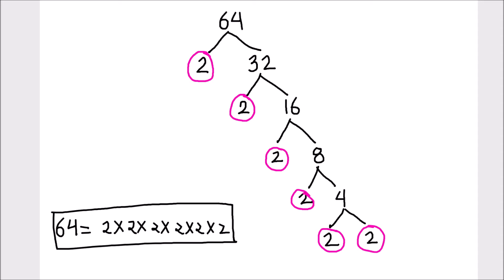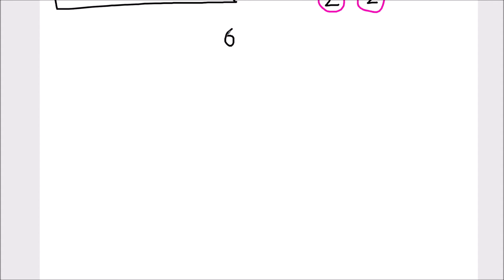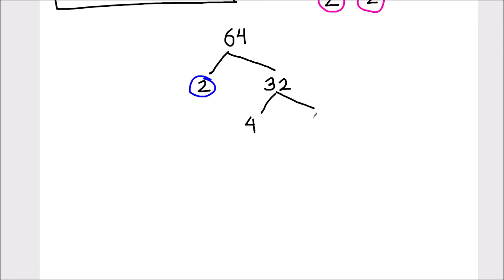There can be more than one factor tree for the same number. So let's make one more factor tree for number 64. We will write the number on top. First, we will divide 64 into 2 factors such that one of the factors is a prime number — that's going to be 2, because 64 is an even number divisible by prime number 2. So the other factor is 32. As 2 is a prime factor, we are going to circle it, and we can divide 32 into 2 factors: 4 times 8 is 32.